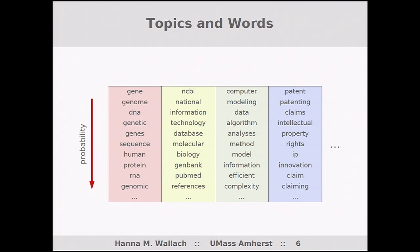I mean something very specific when I say topic: a specialized probability distribution over some fixed vocabulary. Here on the slide we have four different topics, and you'll see that some words occur in the top words of multiple different topics. Every topic contains every word but with a different probability. Topic models find out what topics best characterize a particular document collection. They also work out which composition of topics best accounts for each document. Importantly, these models don't assume each document is about exactly one topic — instead, each document is about multiple different topics in various different compositions.